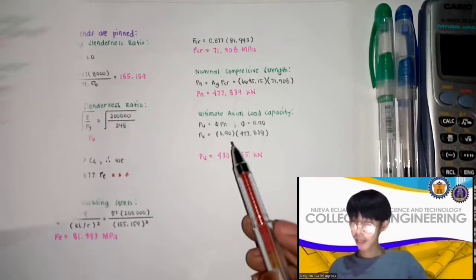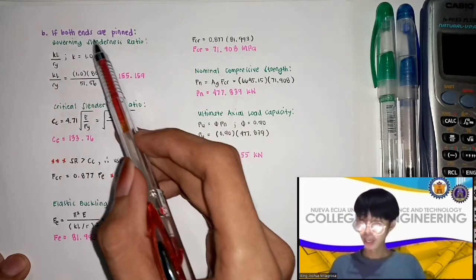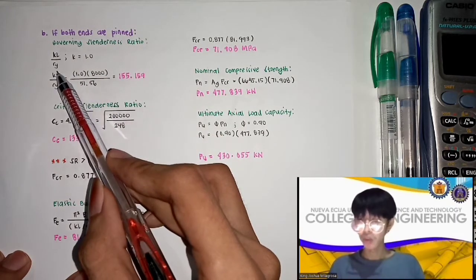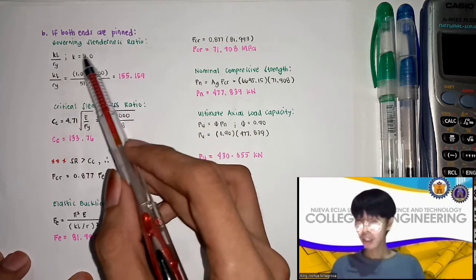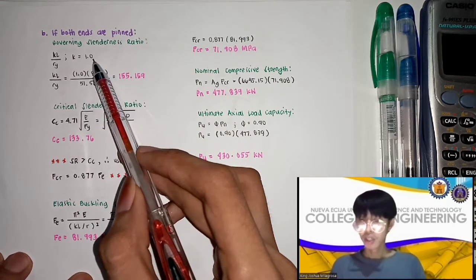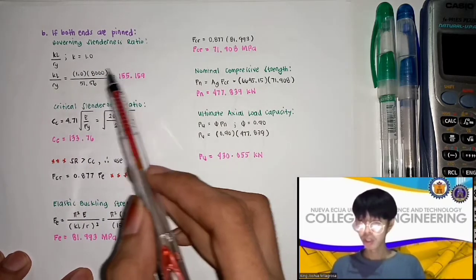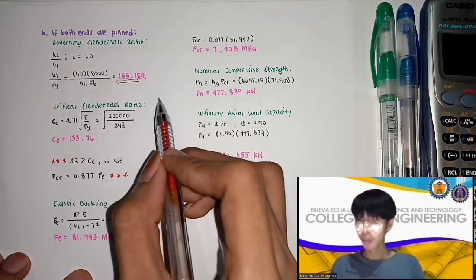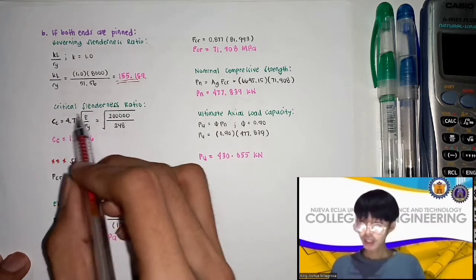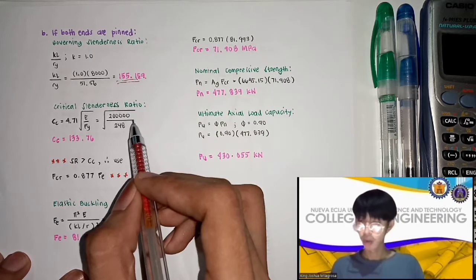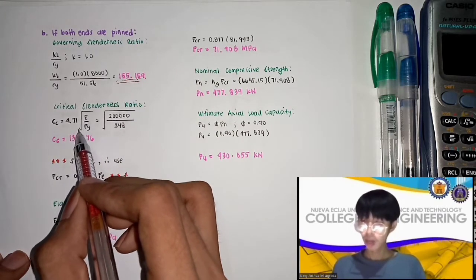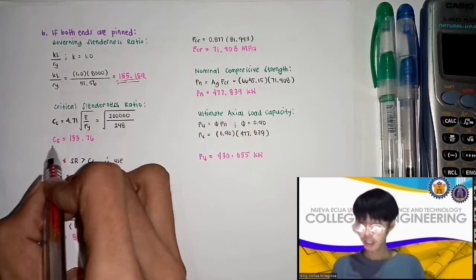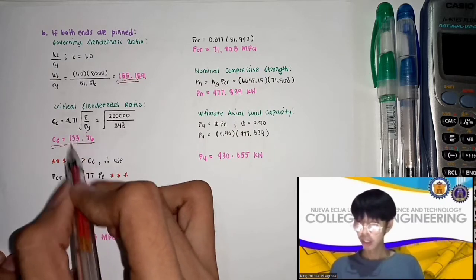Now for letter B — both ends are pinned. Using the same process, we find the governing slenderness ratio: SR = KL/R_Y, where K for pinned ends is equal to 1.0. Substituting, the governing slenderness ratio is 155.159. Then we compute the critical slenderness ratio: CC = 4.71 × √(E/F_Y) = 133.76.